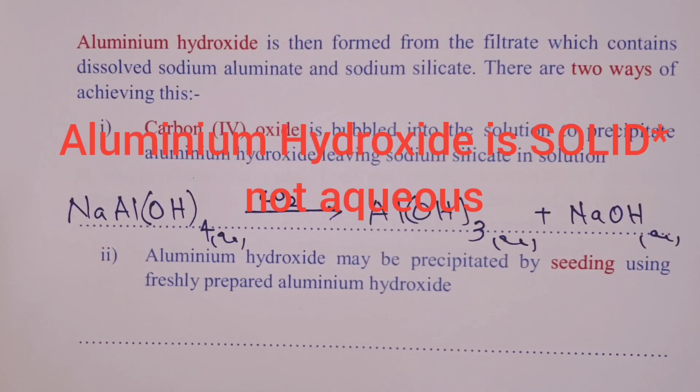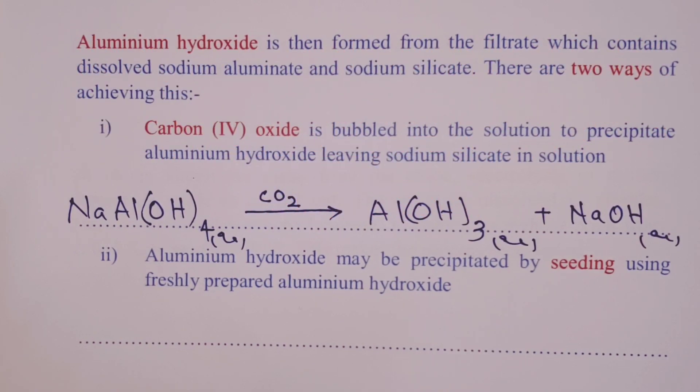So our filtrate will have a mixture of sodium aluminate and sodium silicate. When we bubble carbon (IV) oxide, the aluminum hydroxide is going to be precipitated from our sodium aluminate using the equation below. This will give aluminum hydroxide and of course sodium hydroxide. We don't need to balance that.